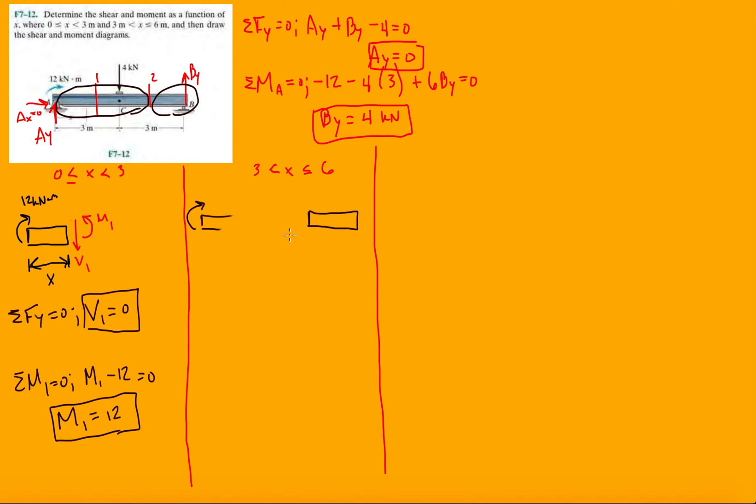That way we don't have to include any of those extra forces, we just look at the side that has the least forces. Now this length is going to be L minus X. L in this case is 6, so it's the length of the beam, 6 minus X. And then we have BY here of 4 kilonewtons, and then we just need our reaction forces V2 and our internal moment M2.